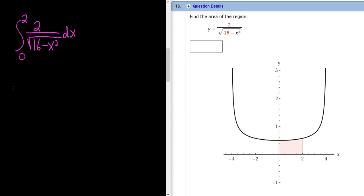So there is a formula we can use. Recall, if you have 1 over the square root of a squared minus x squared dx, this is equal to the arc sine of x over a plus our constant of integration, capital C.